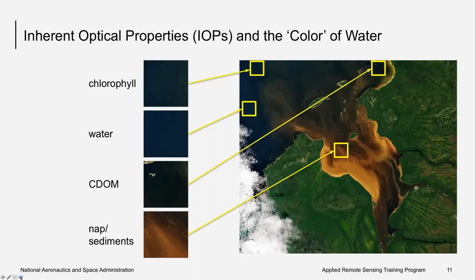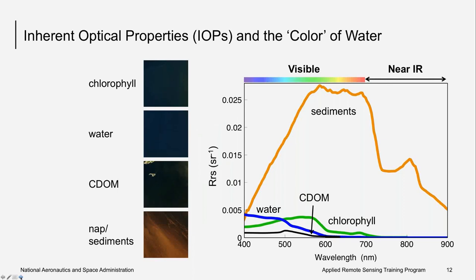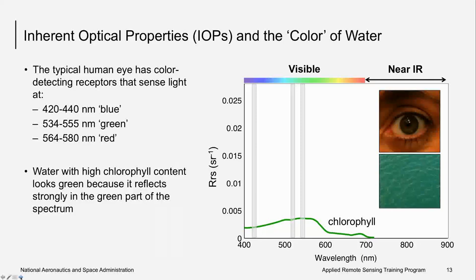What would the remote sensing reflectance spectra look like for these different water types? In the figure, you see wavelength across the x-axis and remote sensing reflectance along the y-axis. The spectrum is very low for CDOM but has higher magnitude for sediments, which intuitively makes sense because sediment images appear light brown and bright. Chlorophyll reflects strongly in the green, with a peak around 550 nanometers. The gray vertical bars represent the wavelength ranges where the human eye detects blue, green, and red light, whereas satellite sensors can detect even more bands depending on spectral resolution.